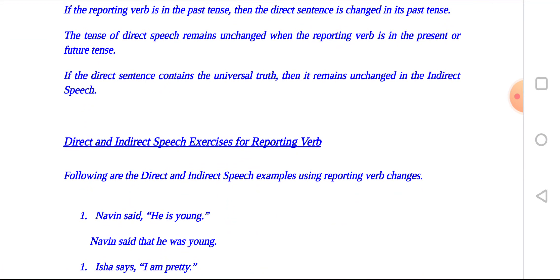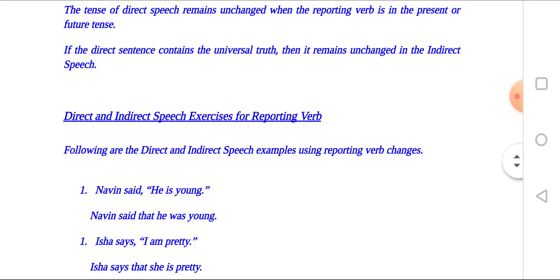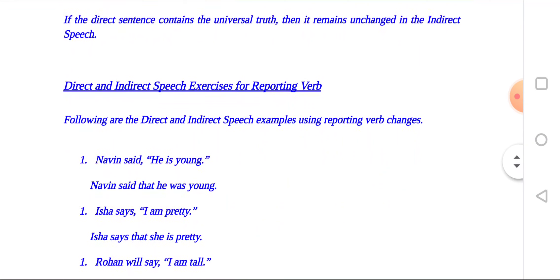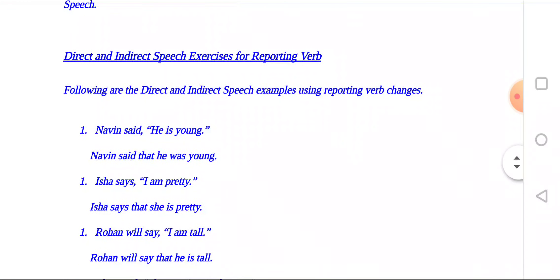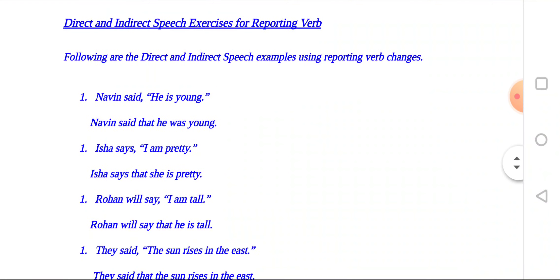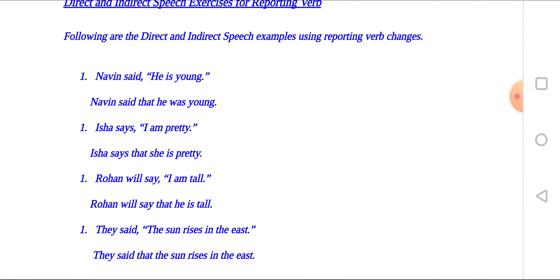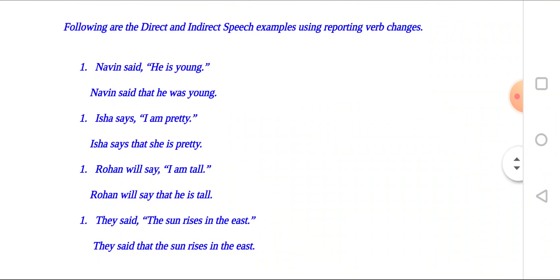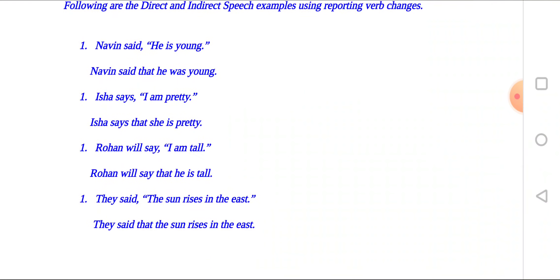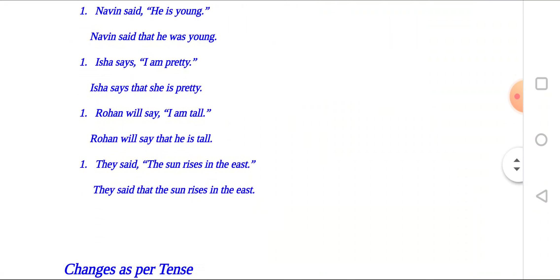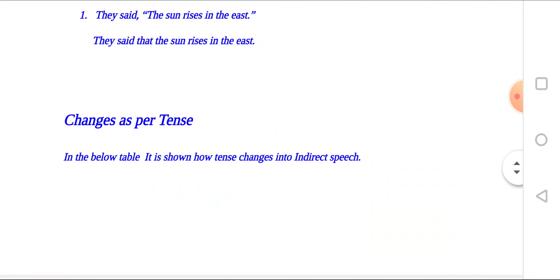Naveen said, 'He is young.' — Naveen said that he was young. Isha says, 'I am pretty.' — Isha says that she is pretty. Rohan will say, 'I am tall.' — Rohan will say that he is tall. They said, 'The sun rises in the east.' — They said the sun rises in the east.